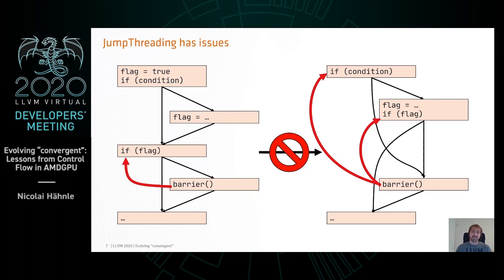If you look into what it would take to fix that, you realize very quickly that this barrier could be almost arbitrarily far away in the code. Ordinarily the jump threading path only looks at the path through the code that it wants to short-circuit. If we now were to say it has to look at a lot more code, that would be quite an expensive analysis to add. So maybe it's not really jump threading that has an issue, but our definition of convergent.